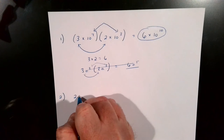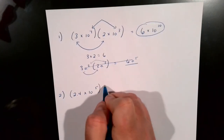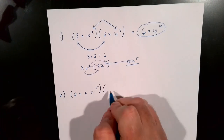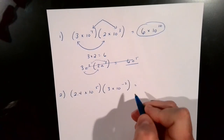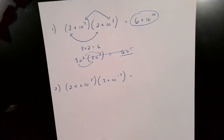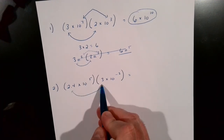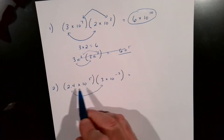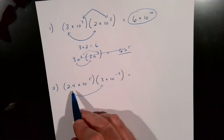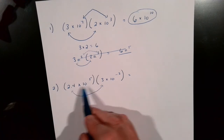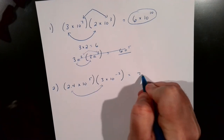If we had 2.4 times 10 to the 5th power, and we want to times that by 3 times 10 to the negative 2nd power, we're simply going to take the 2.4 and times that by 3. Use a calculator if you need to — there's probably one on your computer or online. So 2.4 times 3 turns out to be 7.2.